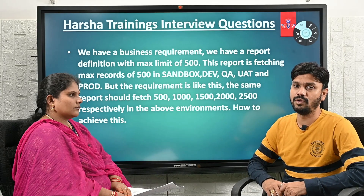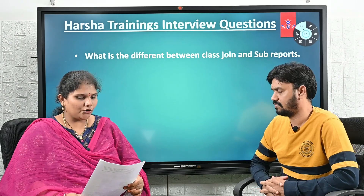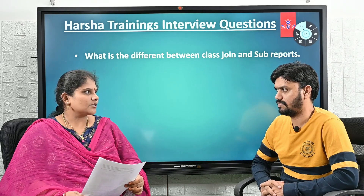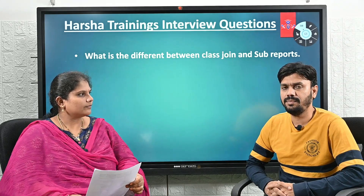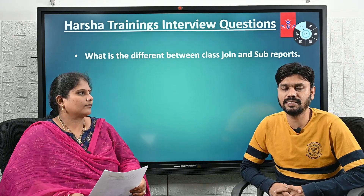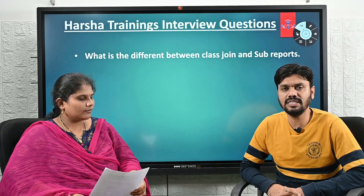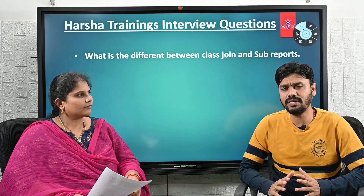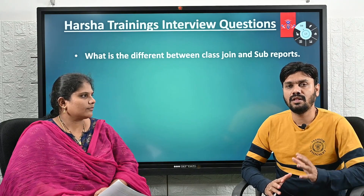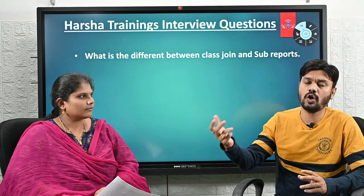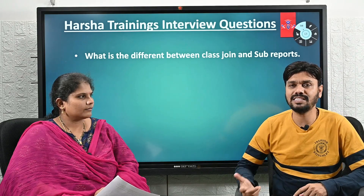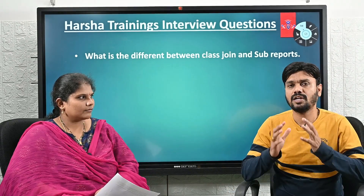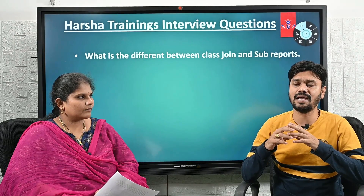Next question: what is the difference between class join and sub reports? In a Report Definition Rule we can implement joins. There are multiple joins available, and class join is one of them; sub report is another. Class join is straightforward — one table is joined with another for matching records, all records, or left-side records.